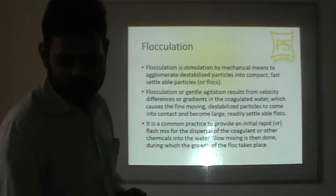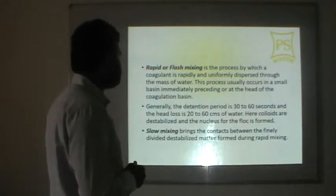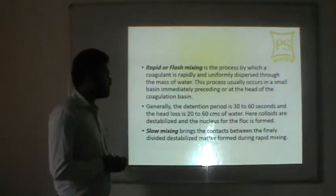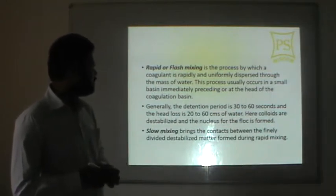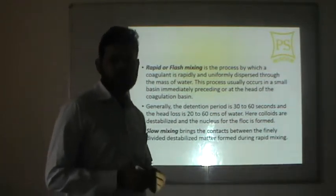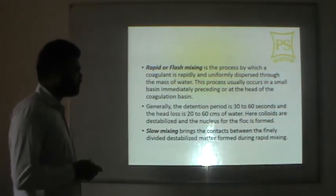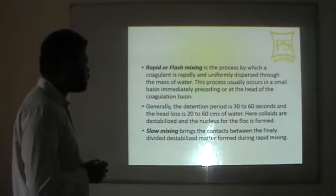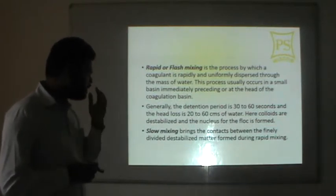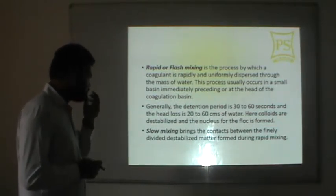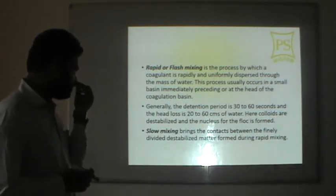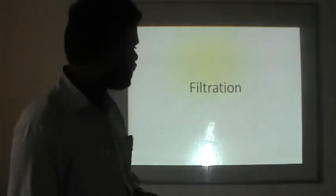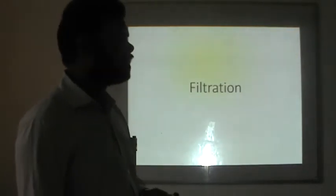Rapid or flash mixing is the process by which the coagulant is rapidly and uniformly dispersed into the mass of water. This process usually occurs in a small basin immediately preceding or at the head of the coagulation basin. Generally, the retention period is 30 to 60 seconds and the head loss is 20 to 60 cm of water. Coagulants are destabilized and the nucleus for the floc is formed. Slow mixing then brings contact between the finely divided destabilized matter formed during rapid mixing.